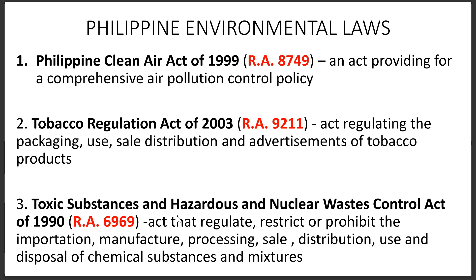Number three is the Toxic Substances and Hazardous and Nuclear Waste Control Act of 1990, or RA 6969. This act regulates, restricts, or prohibits the importation, manufacture, processing, sale, distribution, use, and disposal of chemical substances and mixtures. Take note of the words regulate and restrict — we need standard protocols and permits for the transport and the process of buying and selling these particular goods in the country.